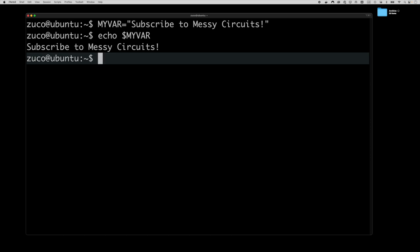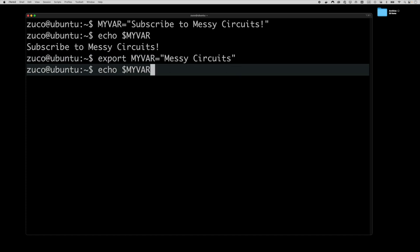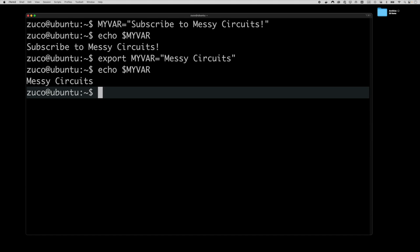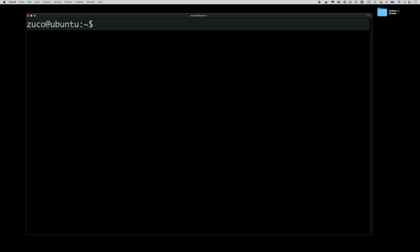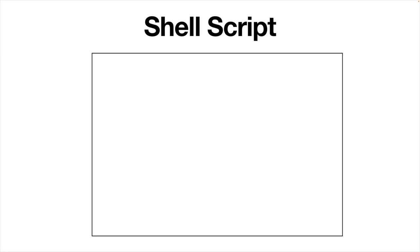To make a variable global we use the export command: export MY_VAR. Now if we query it it gives the updated value, and the difference is that if we start a sub-shell or script, it will see the value of this variable. Now I think we have enough knowledge to start learning about bash scripting. This is a very wide topic that we cannot cover entirely in this video — I'll make another video specifically for bash development. Basically, every command we were typing into the command line before — we put them all together into one text file, and the shell executes those commands one after another.